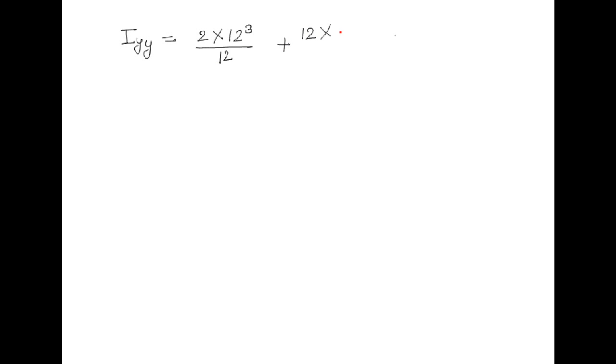Similarly, we can find out the value of Iyy. It is Iyy = (2×12³)/12 for area 1, plus (12×2³)/12 for the second area, plus (2×10³)/12 for area 3 — using the formula db³/12. Simplifying this, we get the final value of Iyy = 462.66 cm⁴.